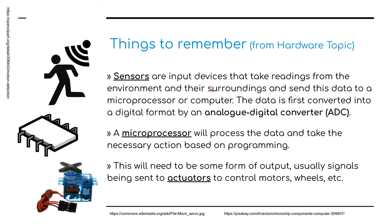What we need to remember — this came about from the hardware section when we're looking at sensors, burglar alarms, and various things — there are three things we need to look at: sensors, microprocessors, and actuators. A sensor is an input device that takes readings from the environment and its surroundings and sends this data back to the microprocessor. The data is usually converted into a digital format by an ADC, an analog to digital converter.